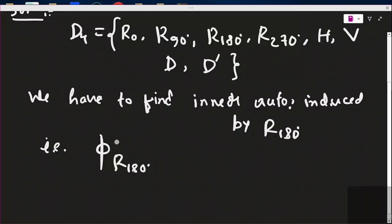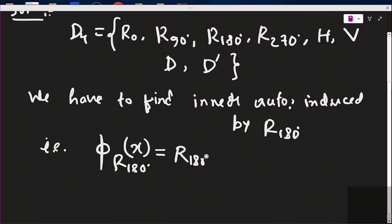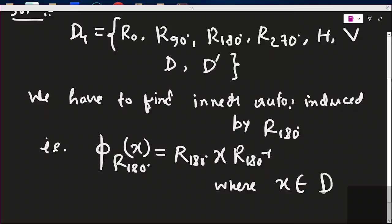An automorphism is a one-to-one onto homomorphism from the same group to itself — it is an isomorphism from the same group to the same group. So it is a function. If x is any element in D4, then phi_{r180°}(x) = r180° · x · (r180°)⁻¹, where x belongs to D4.